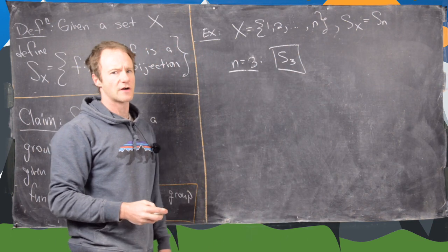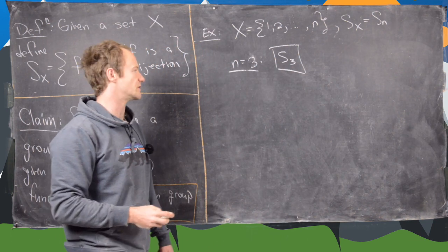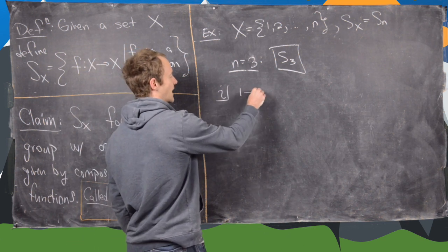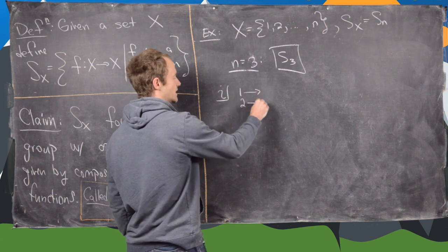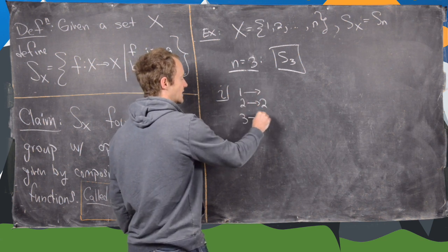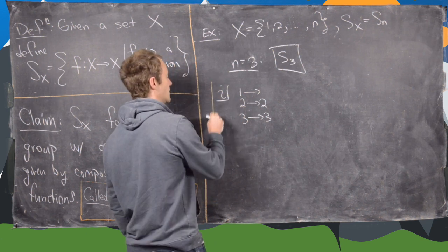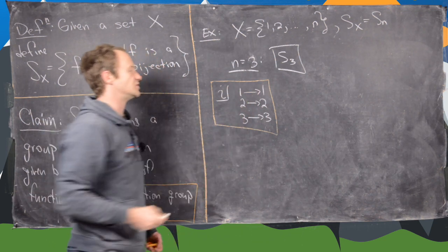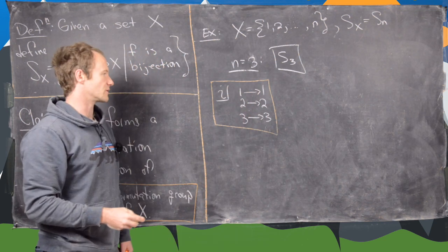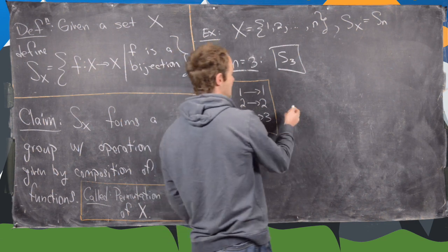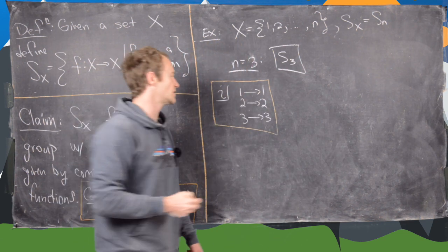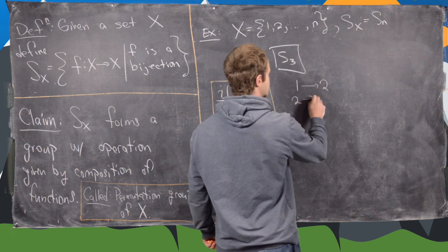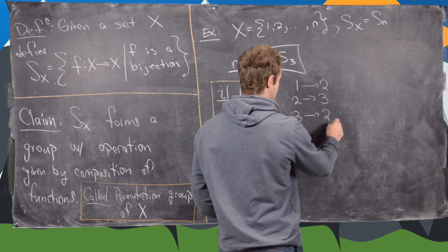The notation we'll start off using is the following. The identity is given by the function that sends 1 to 1, 2 to 2, and 3 to 3 — so it doesn't do anything to the numbers 1 to 3. Then maybe we can have another function that sends 1 to 2, 2 to 3, and 3 back to 1.